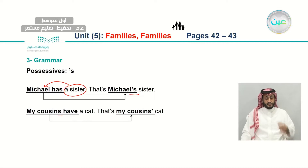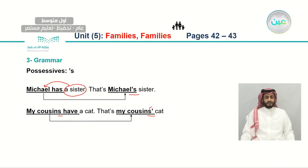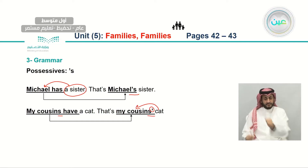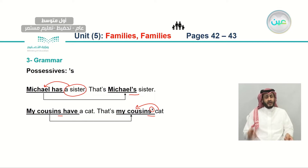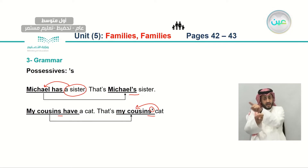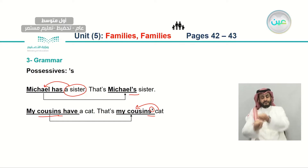My cousins have a cat — that is my cousins' cat. What do you notice? It's plural, so when I have a plural noun, I add the apostrophe after the noun. The cat belongs to my cousins. Let's repeat: Michael has a sister — that's Michael's sister. The 's' here is called the possessive S. My cousins is a plural noun, so to add the possessive S, I write the apostrophe right after the S: my cousins' cat.